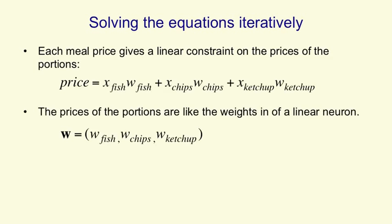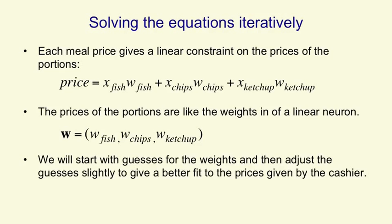The prices of the portions are like the weights of a linear neuron, and we can think of the whole weight vector as being the price of a portion of fish, the price of a portion of chips, and the price of a portion of ketchup. We're going to start with guesses for these prices, and then adjust the guesses slightly so that we agree better with what the cashier says.